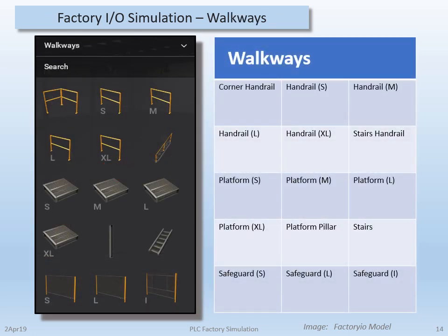There is a variety of non-active components such as handrails, deck plating, and pillars to build the platforms, stairs, and fencing sections. There's also a fencing section that allows a conveyor to pass through it, so you could fence in an entire machine.